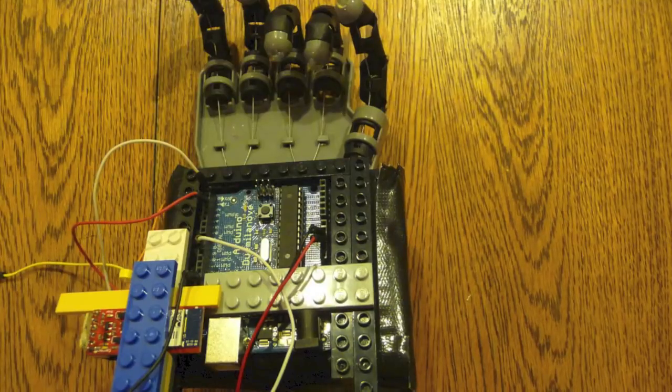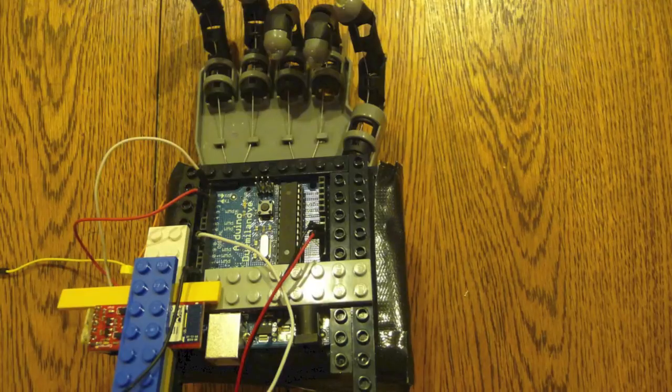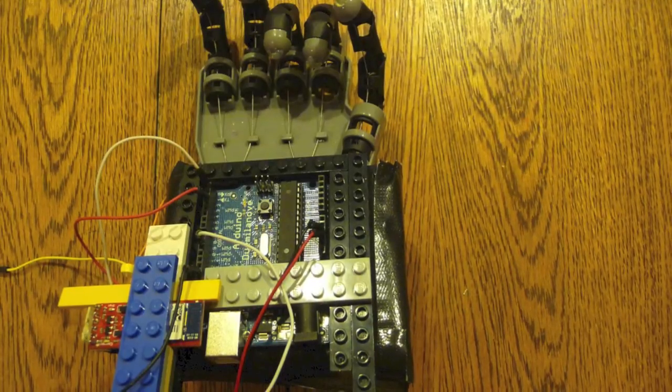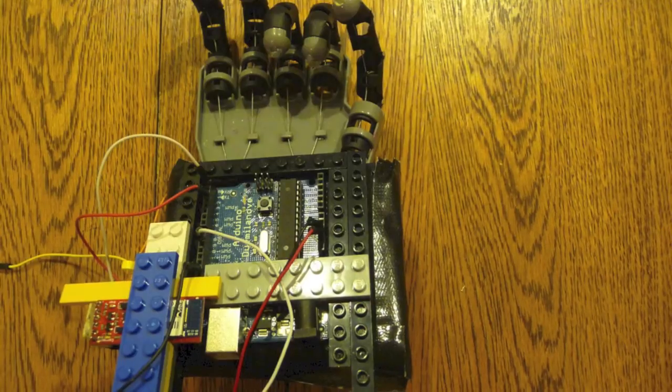We then mounted an Arduino above the servo horn. This way, the Arduino would disguise the servo and the cable mechanism. We then secured the Arduino using Lego bricks, and also added the Bluetooth receiver to the Arduino mounting.